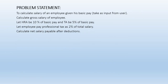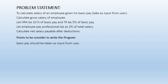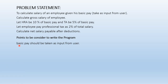I will display the problem statement again and then we will consider some points to be considered to write the program. First of all, we need to take the basic pay from the user. After that we will calculate HRA — HRA is 10 percent — so we write: HRA = basic_pay * 10 / 100, which calculates 10 percent of basic pay.